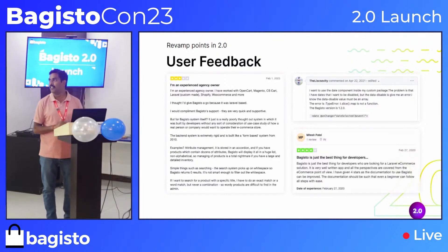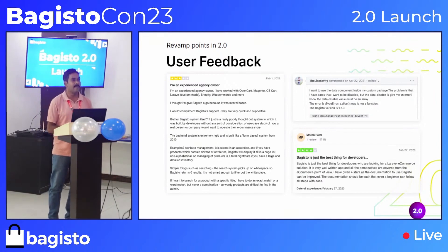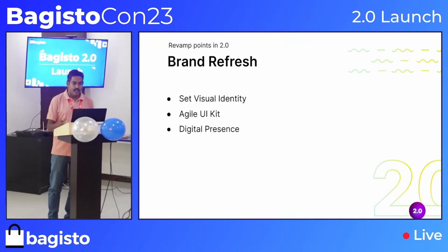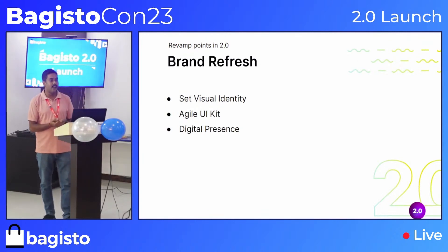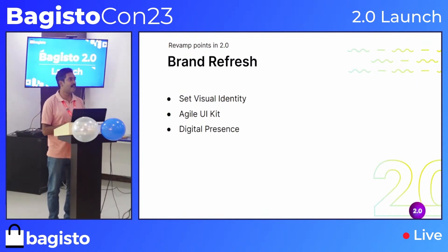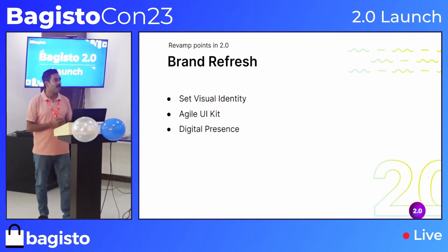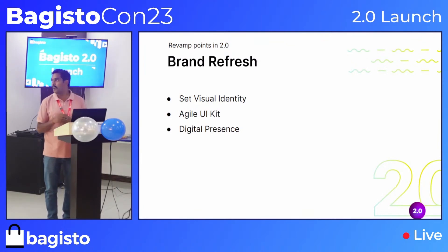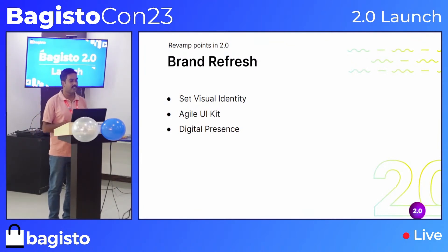There were issues in creating attributes and variation products, so we made that much more comfortable. And since we had been using the old visual identity for around five years, we revamped it with updated typography, color schemes, and layout grids.